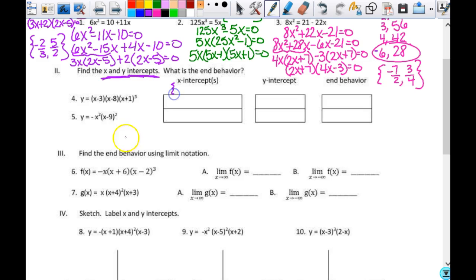But to get my zeros, it's going to give me negative 1, 3, and 8. To actually answer the question, which is the x intercepts, that's going to give me negative 1, 0, 3, 0, and 8, 0.